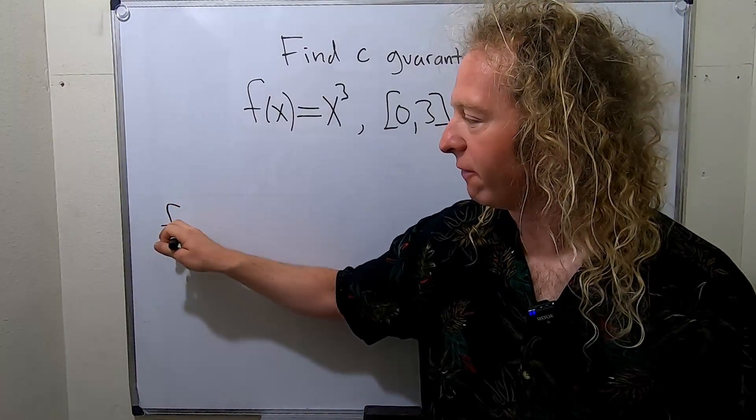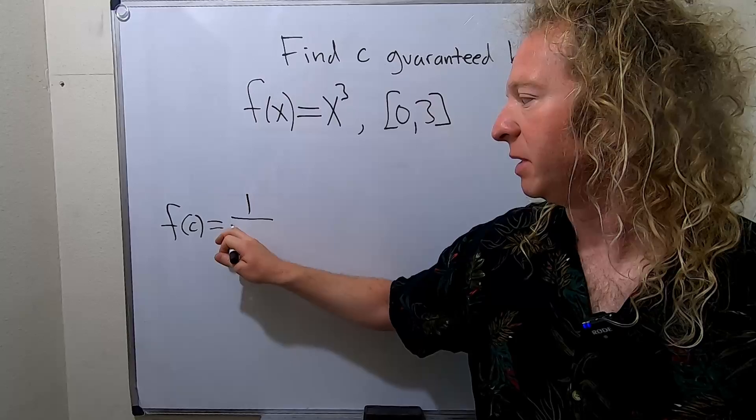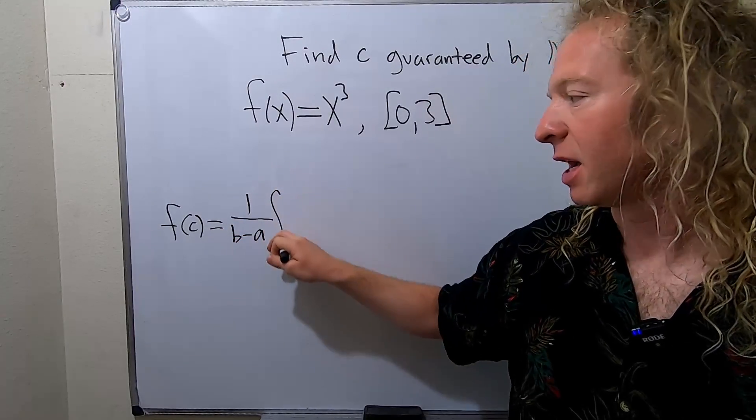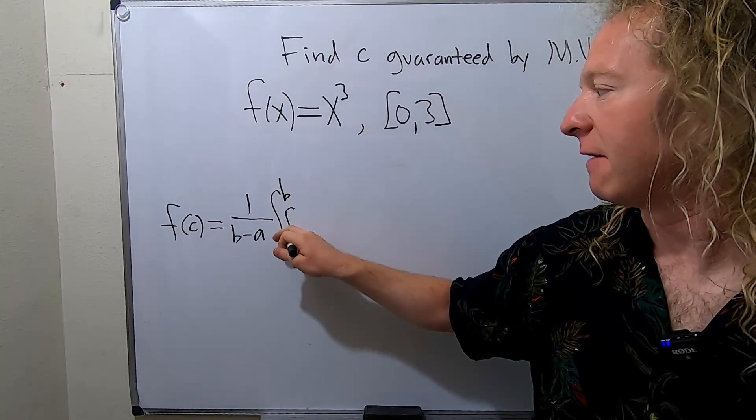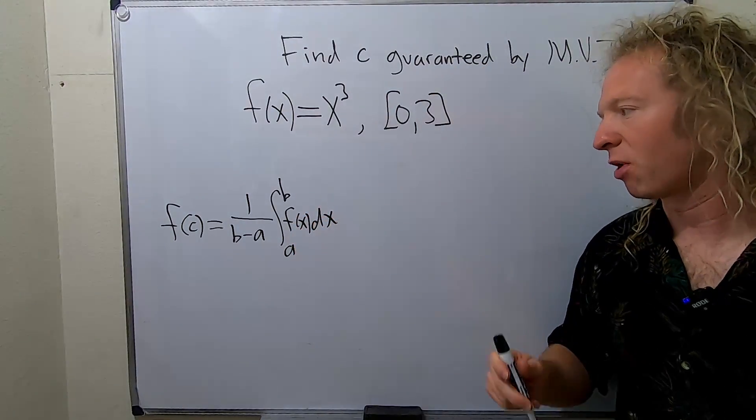Let me just give you the formula and I'll explain it. So we have f(c), this is the formula, and this is equal to 1 over b minus a times the definite integral from a to b of f of x dx.